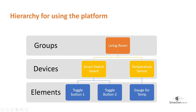Inside each device you can further add multiple elements. For example, the switchboard is an IoT device that can control multiple appliances, so I have two toggle buttons to operate two different devices. Inside the temperature sensor device I have a gauge for measuring temperature and another widget to measure humidity. We will focus on this example and build our IoT device based on it.